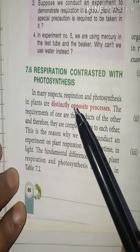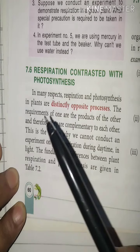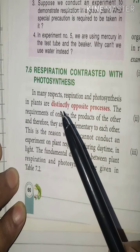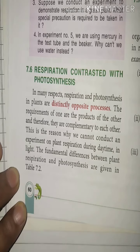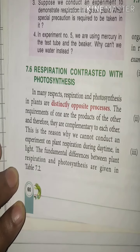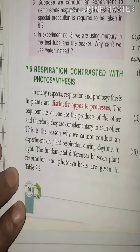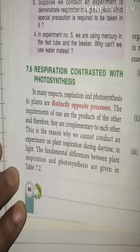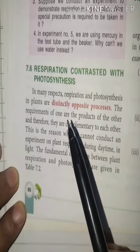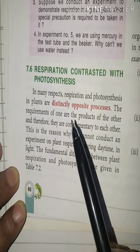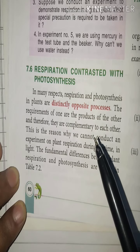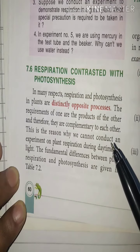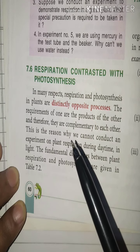As the book states, in many respects respiration and photosynthesis in plants are distinctly opposite processes, because the reactants and products are different — one is an energy-consuming process and the other is an energy-releasing process. The requirements of one are the products of the other, and therefore they are complementary to each other.